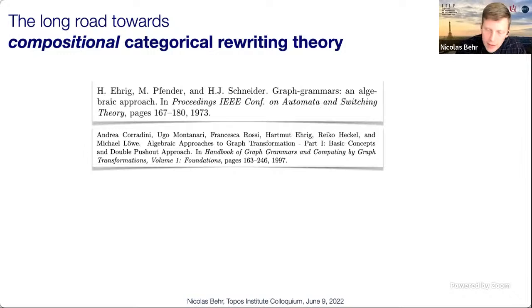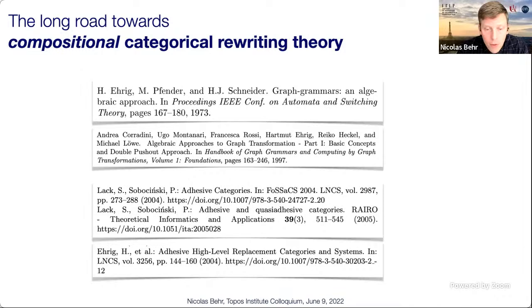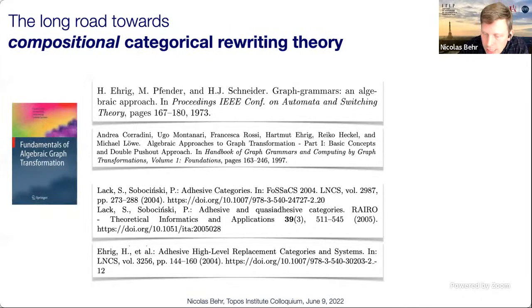Over the next 20 years this developed into a very nice framework where pretty much all of the rewriting semantics could be nicely formalized. A seminal work by Paul Sobociński and his co-author Semlak formalized the categories used as data structures for rewriting series as adhesive categories, and at the time almost all known examples of categories where you could do double pushout rewriting were adhesive categories.